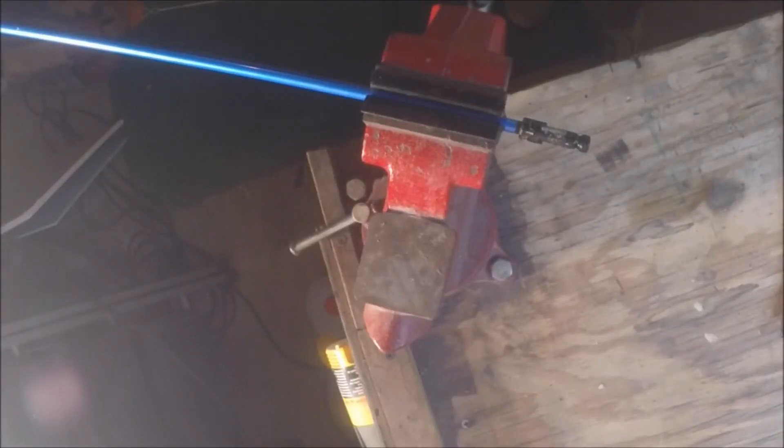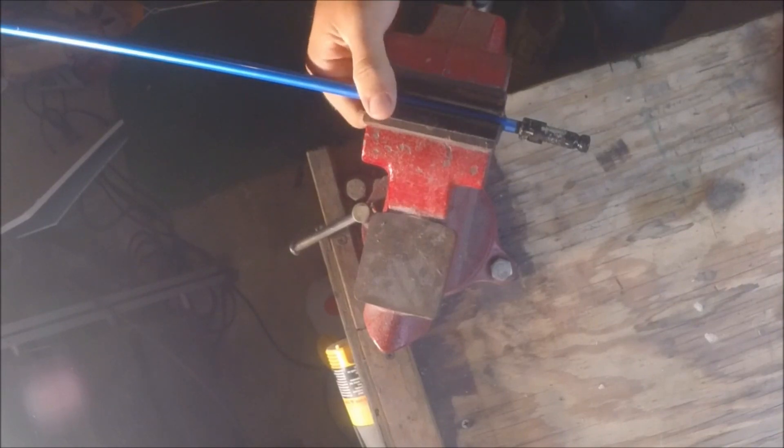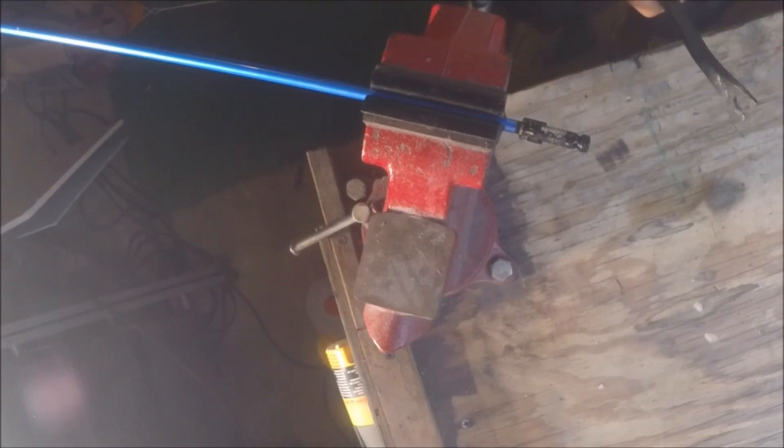Alright, so I've boiled this in water for about 10 minutes and that should be enough to heat this up so that I can take it off. You really do have to work somewhat quickly, otherwise it will cool off and you won't be able to remove the shaft.